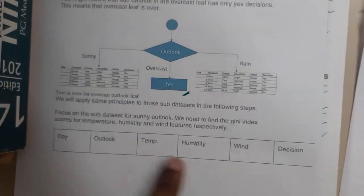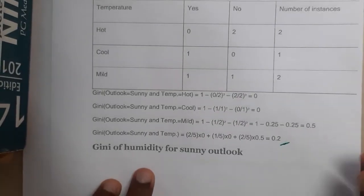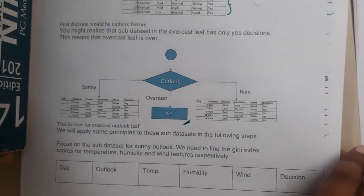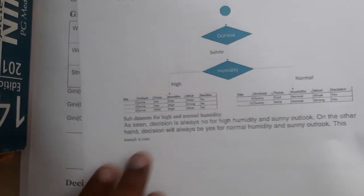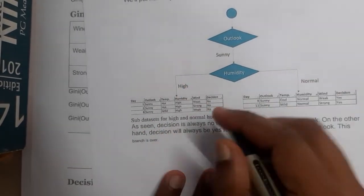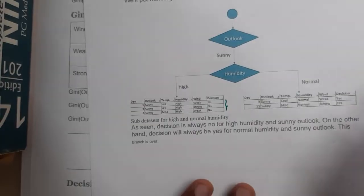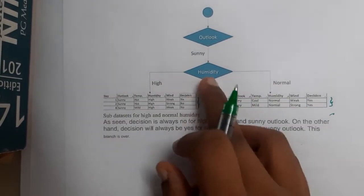For the Sunny subset, we calculate all Gini indexes individually. Among them, Humidity has the minimum Gini index, so Humidity is selected as the splitting node under Sunny. Observing the result: for High humidity everything is No, and for Normal humidity everything is Yes — so the decision is clear without further splitting.